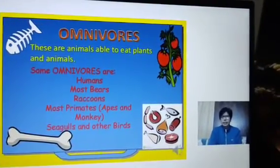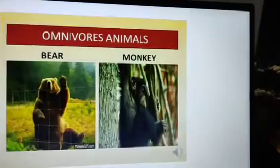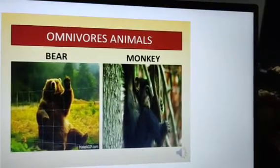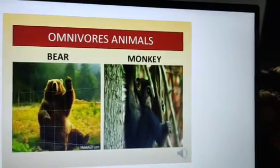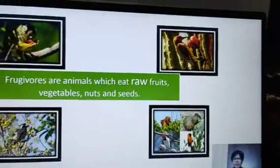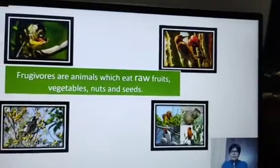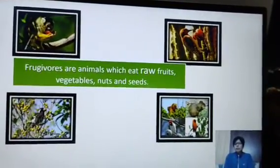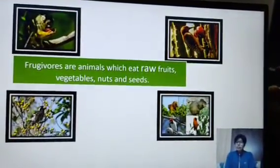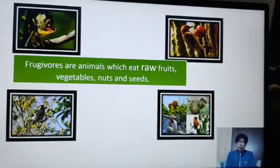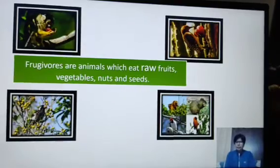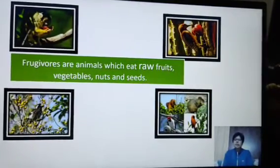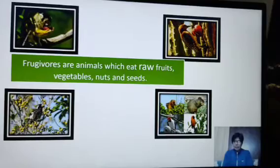So this is the third category. Come to the last category — that is frugivores. Those animals which eat only raw fruits, vegetables, nuts, and seeds. So these are called frugivore animals.